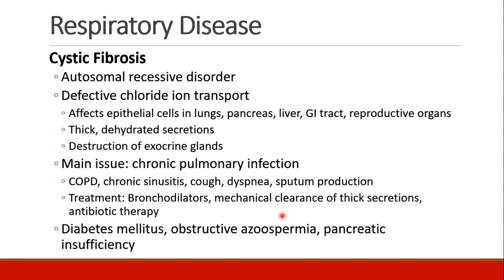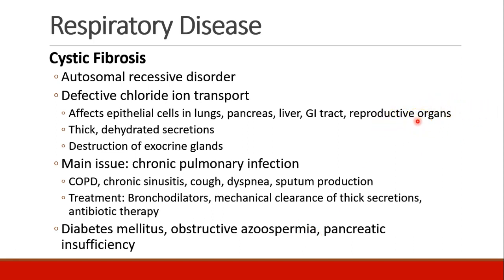Cystic fibrosis patients are at risk for COPD, chronic sinusitis, cough, dyspnea, and terrible sputum production. Their treatment includes bronchodilators, mechanical clearance of thick secretions — suctioning and percussion on their chest wall — and they are always requiring antibiotic therapy for the constant, recurrent, severe infections they get in their lungs. They also get diabetes because of the destruction of their pancreas, azoospermia because of destruction of sperm secretion in the testicles, and pancreatic insufficiency.